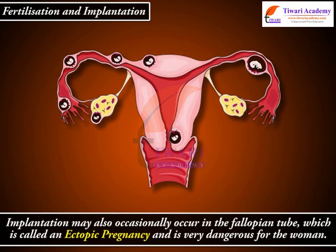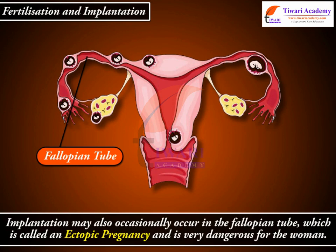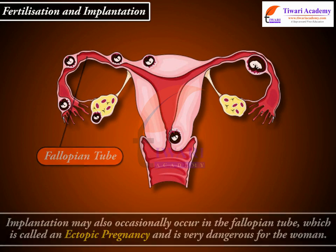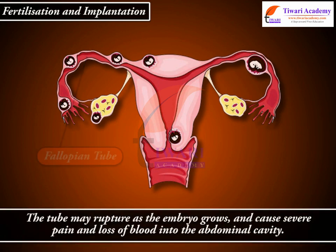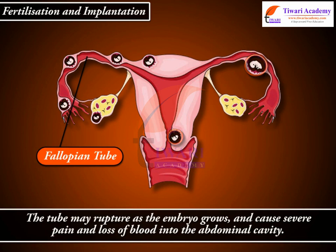Implantation may also occasionally occur in the fallopian tube, which is called an ectopic pregnancy and is very dangerous for the woman. The tube may rupture as the embryo grows and cause severe pain and loss of blood into the abdominal cavity.